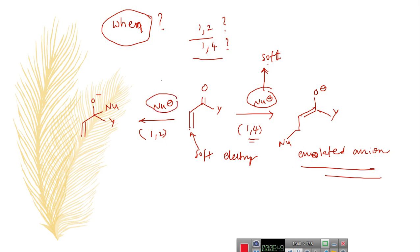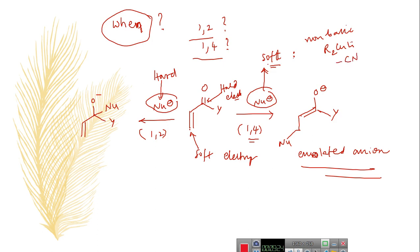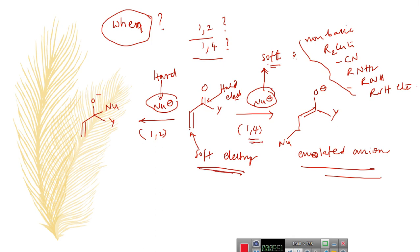When you have hard nucleophiles, they attack at hard electrophiles in 1,2 manner. Soft nucleophiles are generally non-basic. Organolithium cuprate is only a nucleophile — a weak nucleophile, not a base. Other examples of soft nucleophiles are cyanide, secondary amine, and thiols. These functionalities generally act as soft nucleophiles and prefer 1,4 addition, attacking at the soft electrophiles.